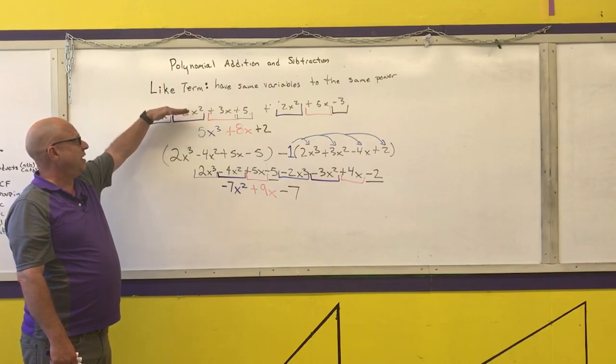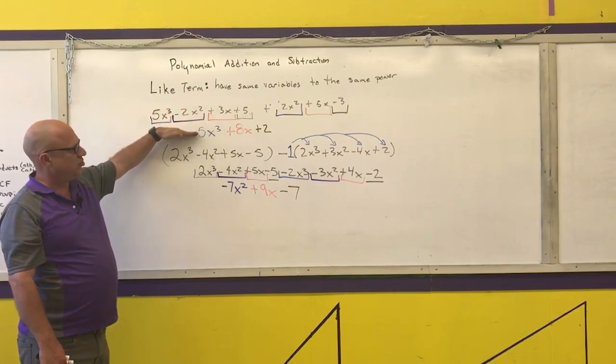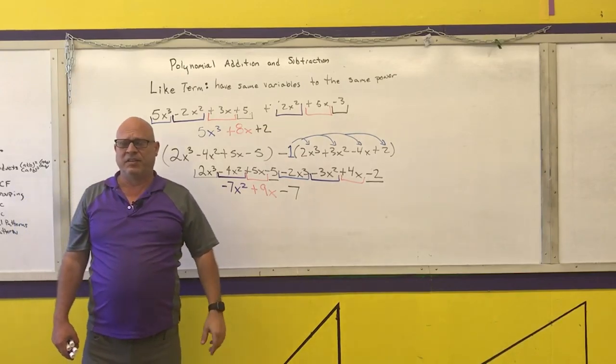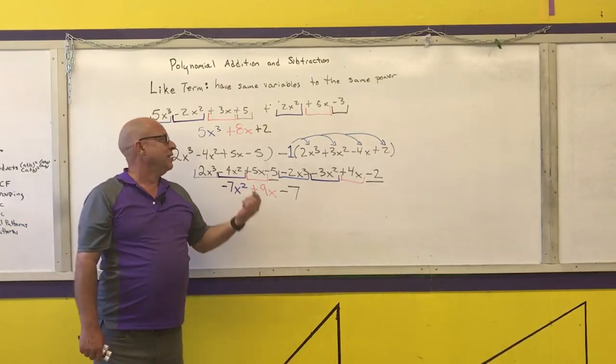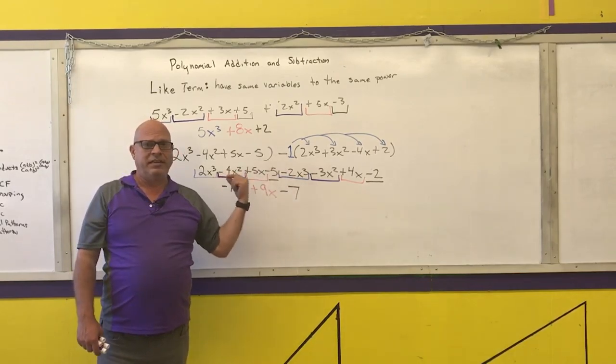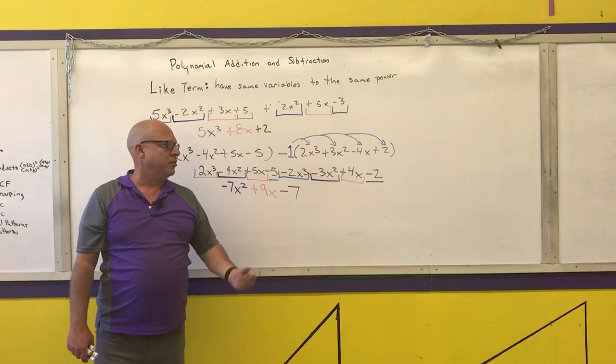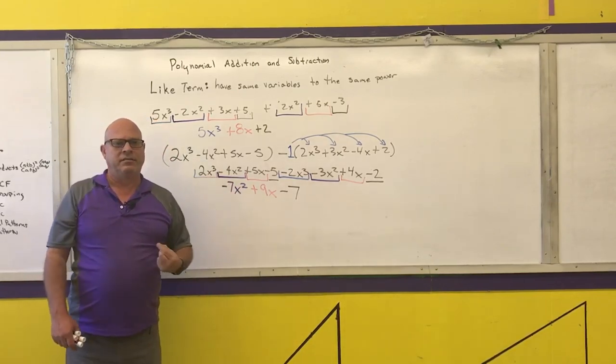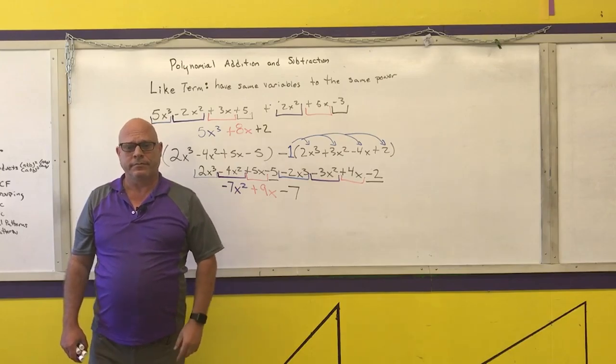I expect you guys to be able to identify what are like terms and to be able to add and subtract polynomials just like I expect you to be able to add and subtract basically any single digit number. Most of these things will end up being addition and subtraction of single digit numbers, and then you just write what the variable to its power is after it. Thank you.